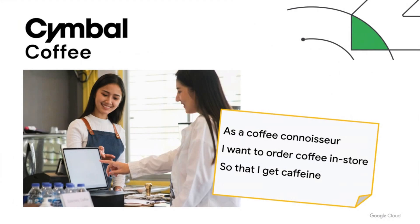Symbol Coffee wanted to provide a more personalized experience to coffee connoisseurs by installing kiosks in every store that let customers visit their local cafe and order a custom-made latte, cappuccino, or macchiato made exactly how they like it. This experience should be consistent on mobile phones and in-store kiosks running Windows. The application should scale quickly as busy customers arrive looking for their first caffeine of the day.